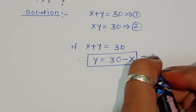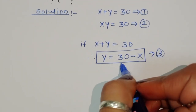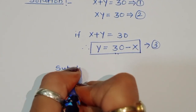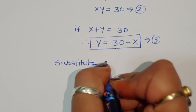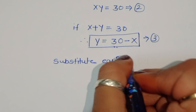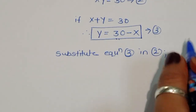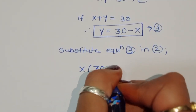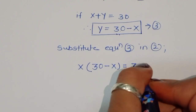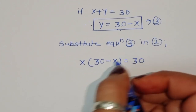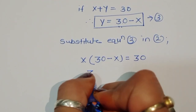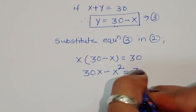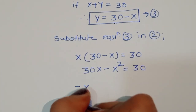Now we substitute equation 3 into equation 2. We get x times (30 minus x) equals 30. Multiplying out, this becomes 30x minus x squared equals 30.